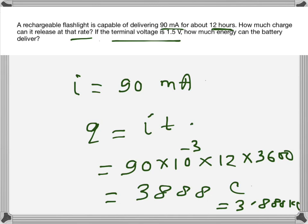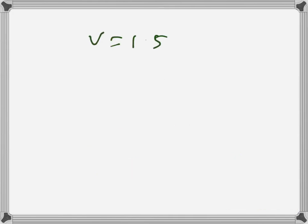Then it says if the terminal voltage is 1.5 volts, how much energy can the battery deliver? So V is 1.5 volts, i is 90 milliamps. First we can find the power from here, that will be Vi.